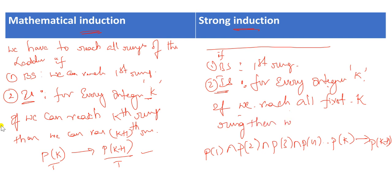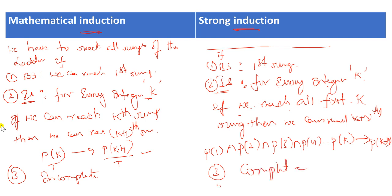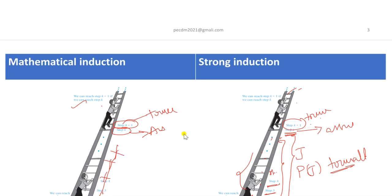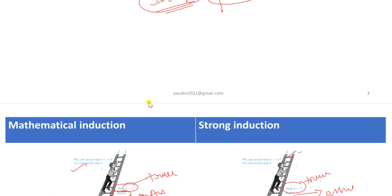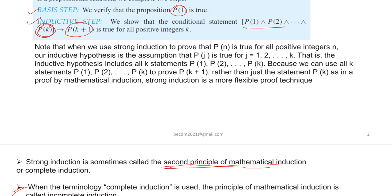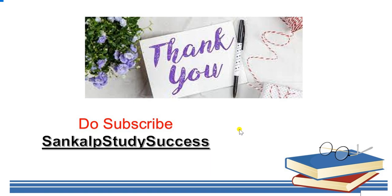So that is the difference: in Strong Induction, we reach the (K+1)th rung only after confirming all first K rungs. Mathematical Induction is called incomplete induction, while Strong Induction is called complete induction and is also the second principle of mathematical induction. Hope you understand what Strong Induction is and the difference between Mathematical Induction and Strong Induction. We have two more examples to discuss in the next class. Thank you for watching — do subscribe to our channel, Sankar's Study Success, for more videos.